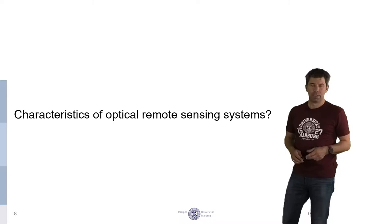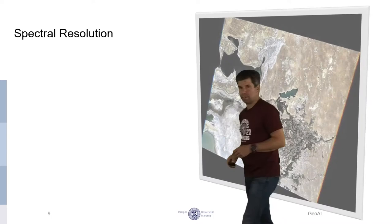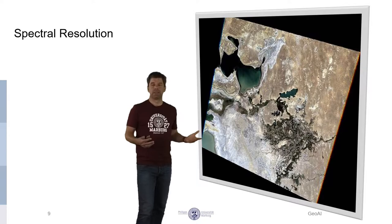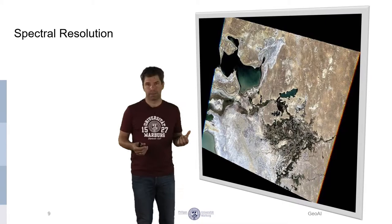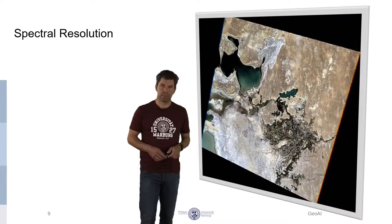There are three of them, and we start with the spectral resolution. When we look at that image, it's a color composite. Then that image actually consists not of a single layer, but of three layers: one layer in the blue spectrum, one in the green spectrum, and one in the red spectrum.